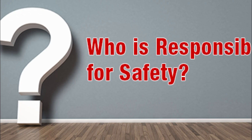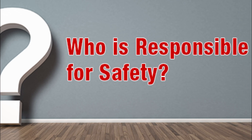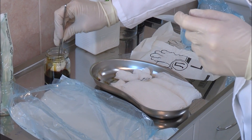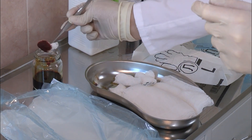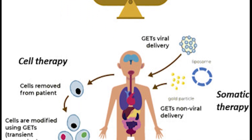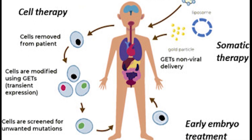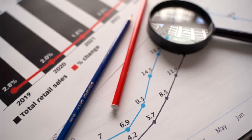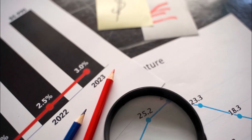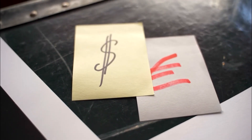Another concern is determining who is responsible if something goes wrong with a CRISPR-edited organism. This is a complex issue that requires careful consideration given the potential consequences of gene editing. Despite these challenges, the potential benefits of CRISPR are significant and its impact on the field of genetics is likely to be profound. As research continues, we can expect to see advances in the use of CRISPR for the treatment of genetic disorders and other applications in the fields of agriculture, biotechnology, and more.